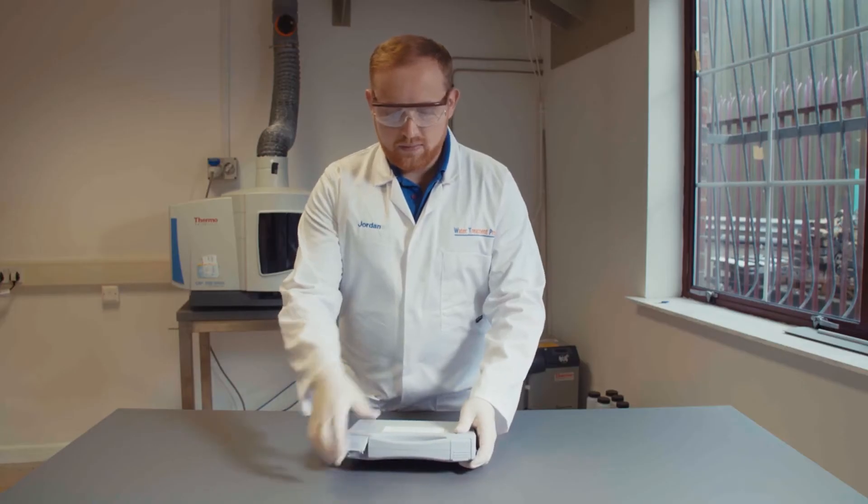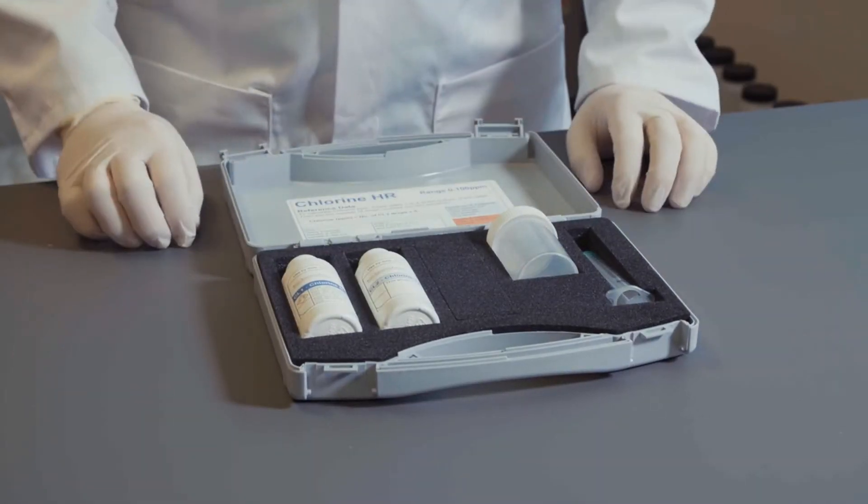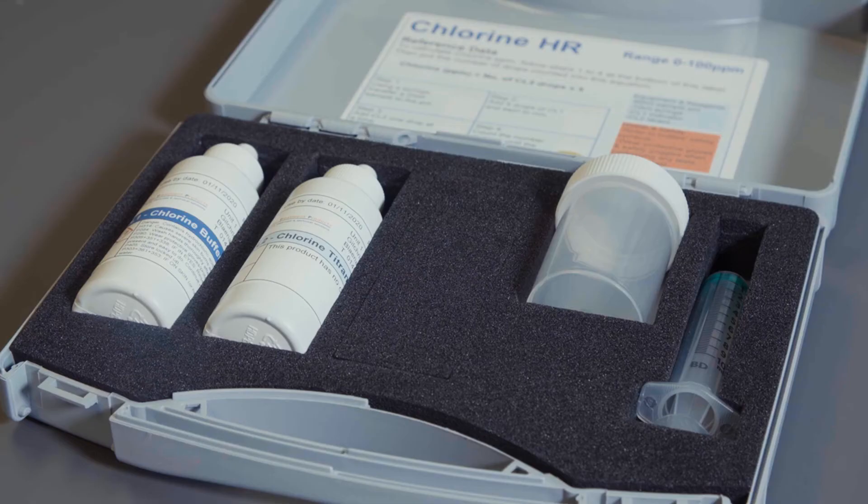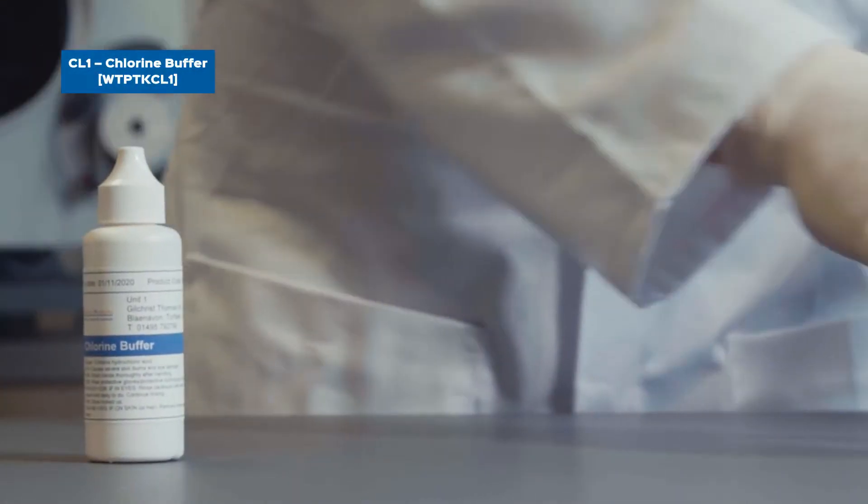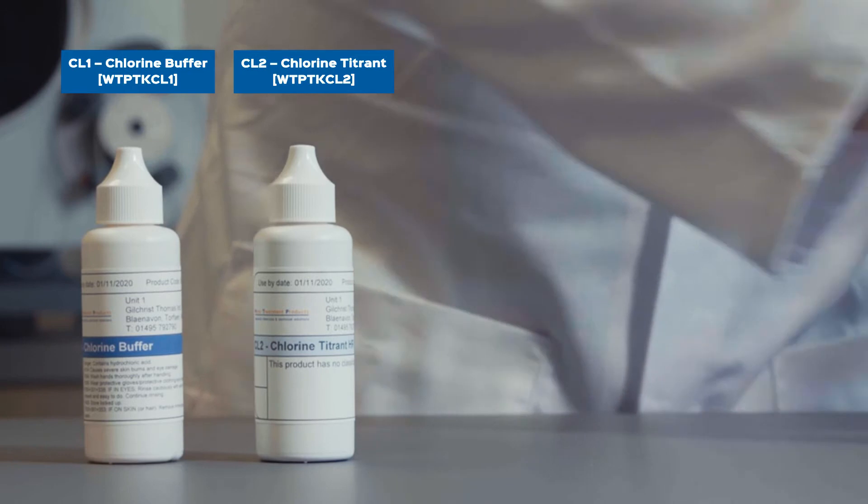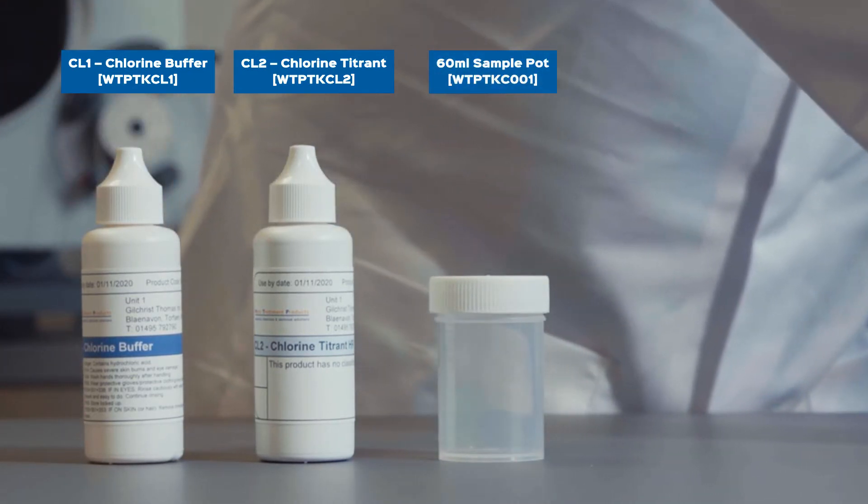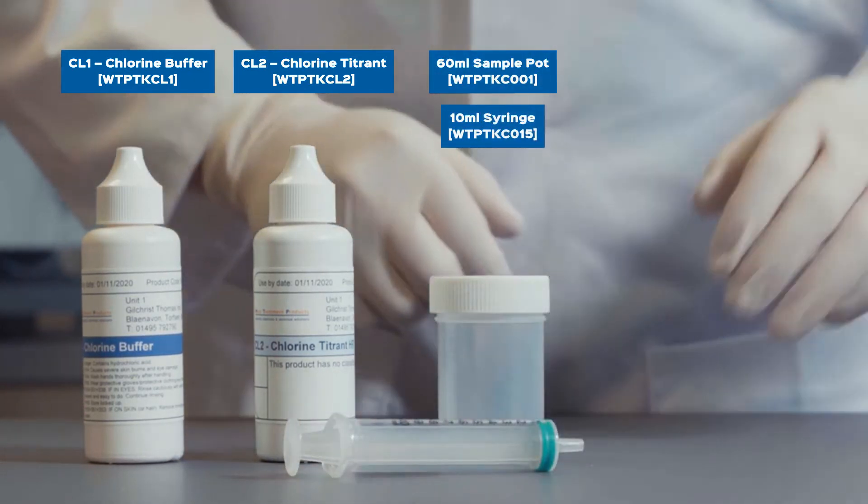The test kit contains all equipment and instructions necessary for undertaking a Chlorine High Range Test. The kit consists of CL1 Chlorine Buffer, CL2 Chlorine Titrant, a 60ml sample pot, and a 10ml syringe.